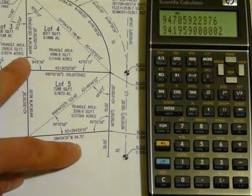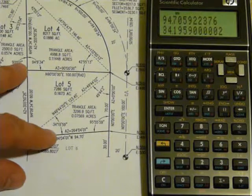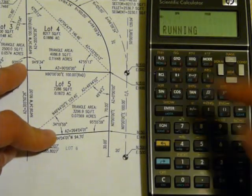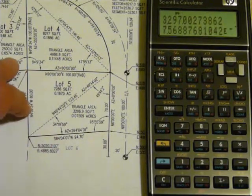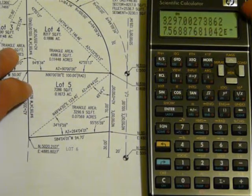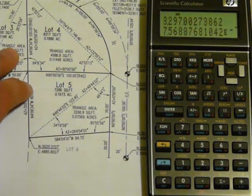94, 70, and angle 34, 19, 59. Press RS. It will show us the square feet and the acres - square feet on top, acres on the bottom, as the prompt showed.